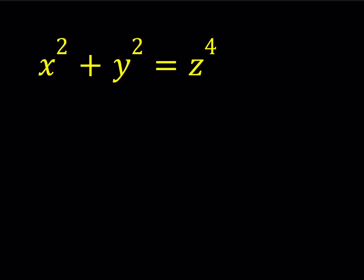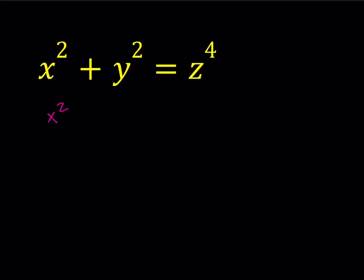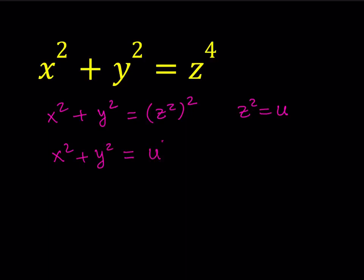First of all, I'm going to replace z squared with something. Let's go ahead and write this equation as x squared plus y squared is equal to z squared, squared. If I replace z squared with u, then I should be getting the Pythagorean theorem: x squared plus y squared is equal to u squared.